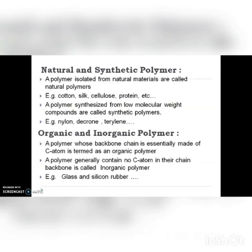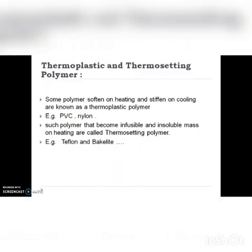Organic polymers are those in which the carbon atom is in the backbone. Normally, almost all polymers are organic polymers. Inorganic polymers do not contain carbon atoms in their chain backbone. Examples of inorganic polymers are glass and silicone rubber.